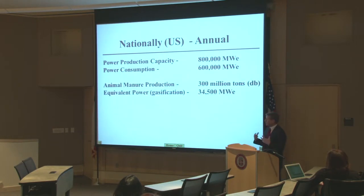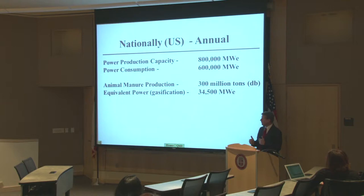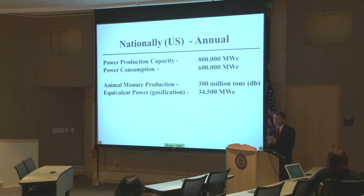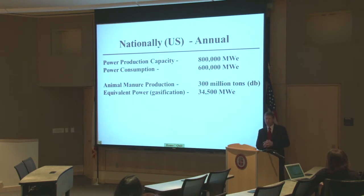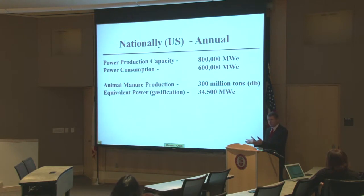Let's take animal manure production in the United States. If we took all of that manure, took the dry biomass, and converted it to electricity in a gasification system, you can see the potential energy we could produce — a little under 35,000 megawatts. It's not a drop in the bucket; it's a fairly large potential of energy.